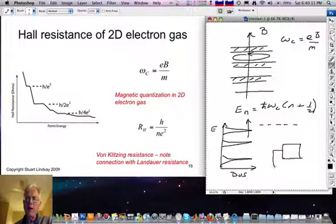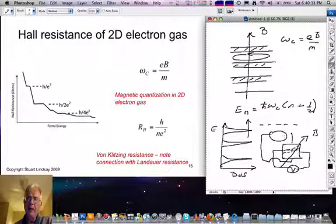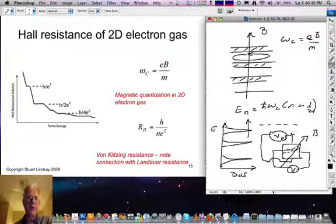In measuring the Hall resistance, one applies a voltage V across a device like this, places it in a magnetic field, so that a current is driven this way. The effect of the cyclotron orbital is to deflect carriers perpendicular to the magnetic field, with the result that a Hall voltage can be picked up perpendicular to the direction of the main current. And from this a Hall resistance can be deduced. This Hall resistance was found by von Klitzing to be precisely quantized in multiples of Planck's constant divided by the electronic charge squared. You'll recognize that this is just twice the Landauer resistance. For the discovery of this fundamental quantum of resistance, von Klitzing was awarded the Nobel Prize.